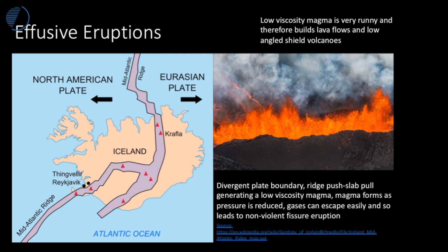At this junction you get the eruption of basaltic lava, which is made from basalt, and it often occurs along fissures — lines along which the plates are pulling apart, along which you get eruptions. The volcanoes which are formed on land are often low-angled because the magma which is produced is very fast flowing and runny.